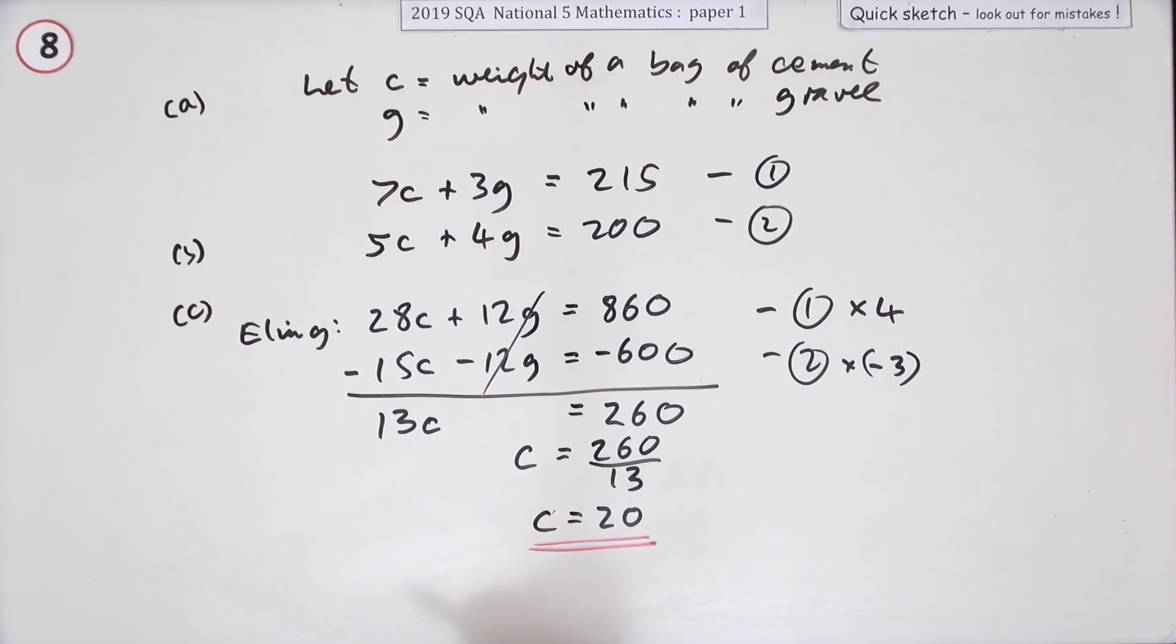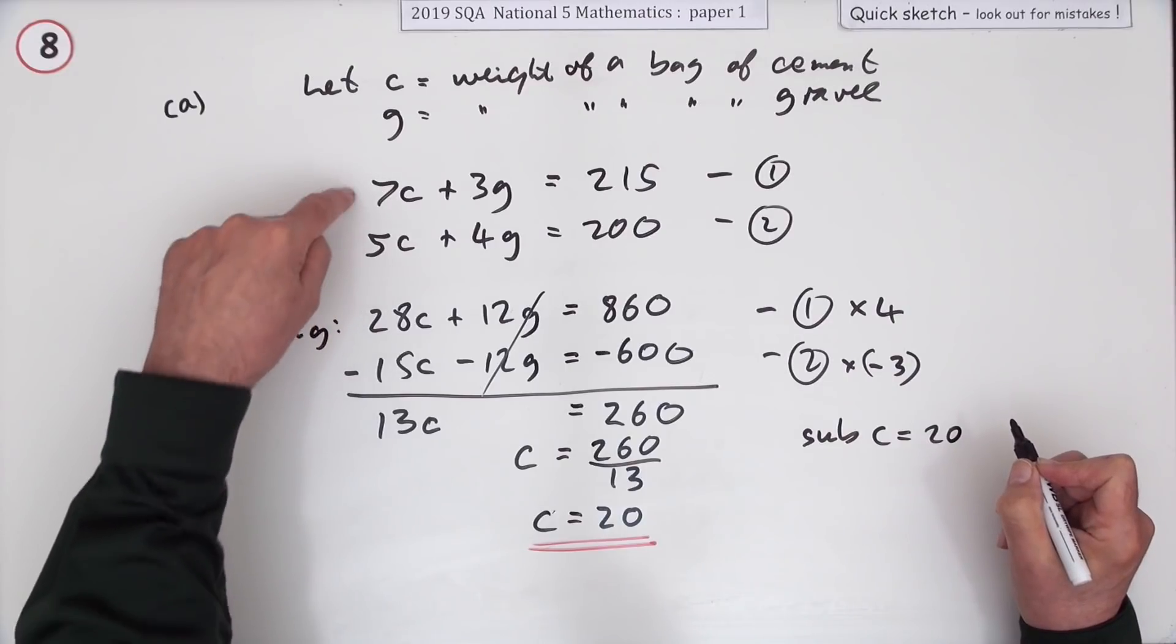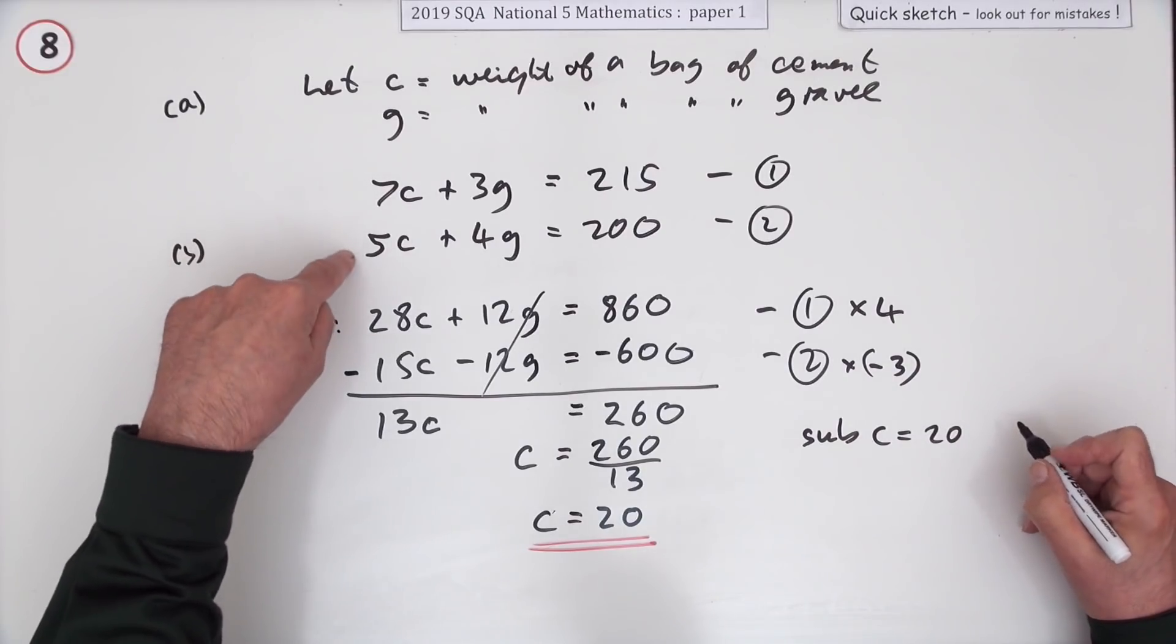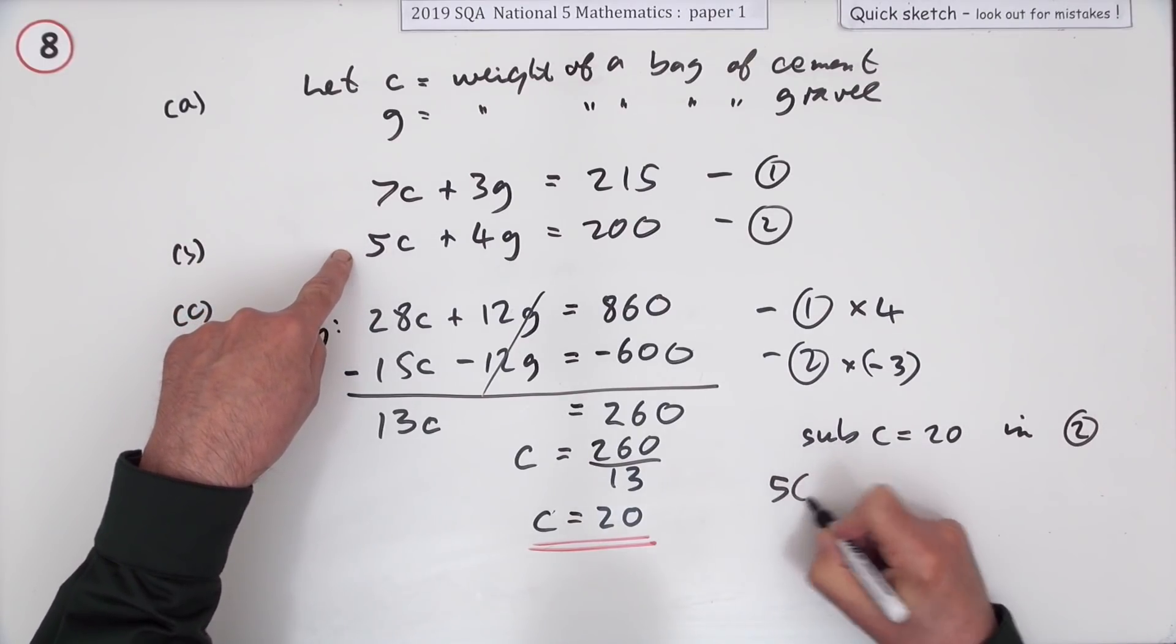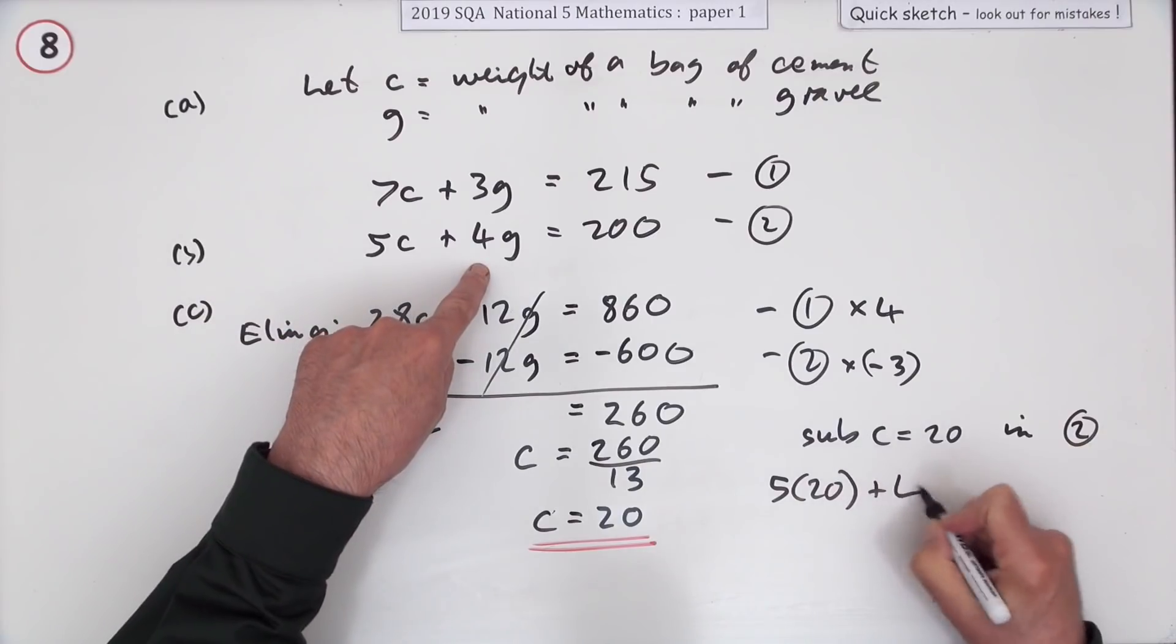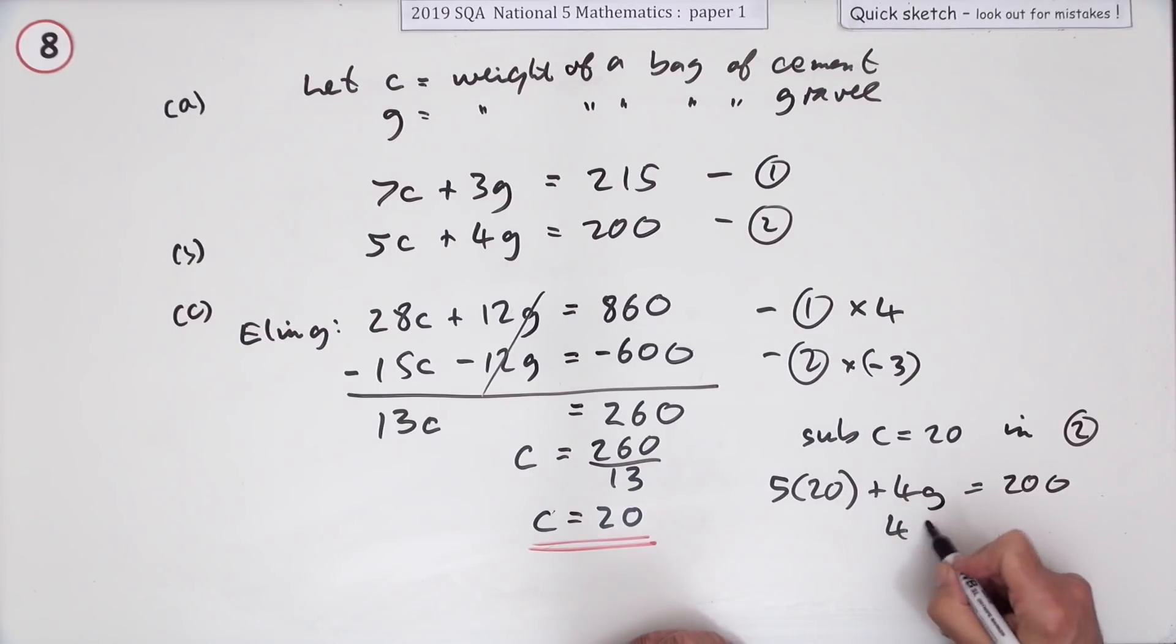So a bag of cement must weigh 20 kilograms. I'm going to substitute that - substitute C equals 20 into this one. So that means I've got 5 times 20 plus 4G is 200. Well, 5 times 20 is 100, so 4G is 100. Divide by 4, that's 25. So the gravel's heavier then.